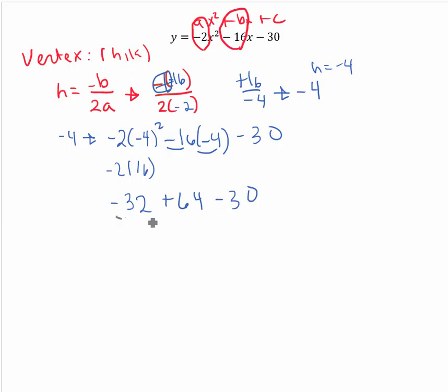I like to combine my negatives or these two first. Negative 32 minus 30 is negative 62 plus 64. That is 2. So now my vertex is at negative 4 and 2.